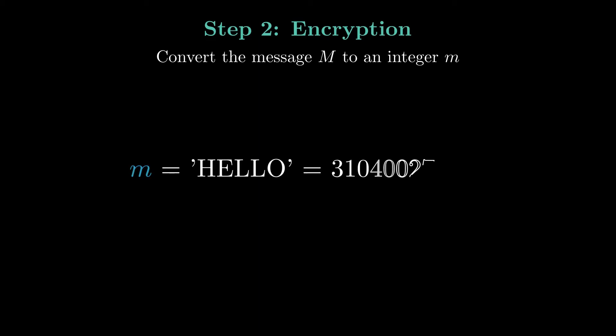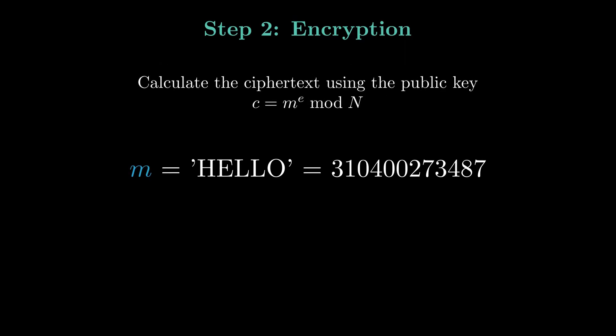Now let's move to the encryption step. First, we need to convert our message hello into an integer m. Then we use the public key n and e to encrypt the integer m. The ciphertext c is equal to m raised to the power of e modulo n.